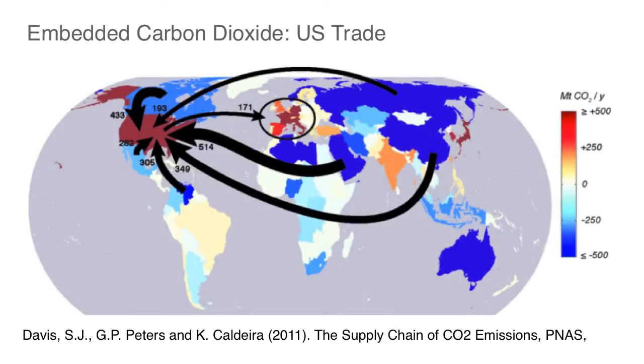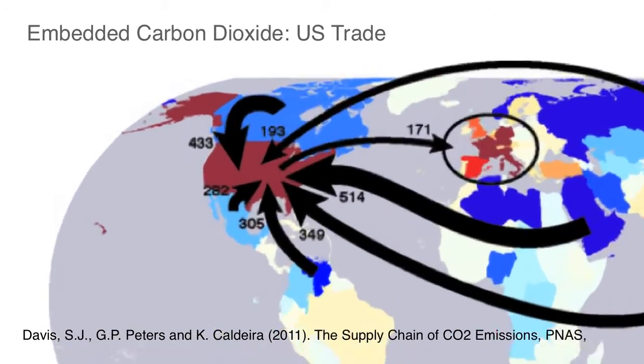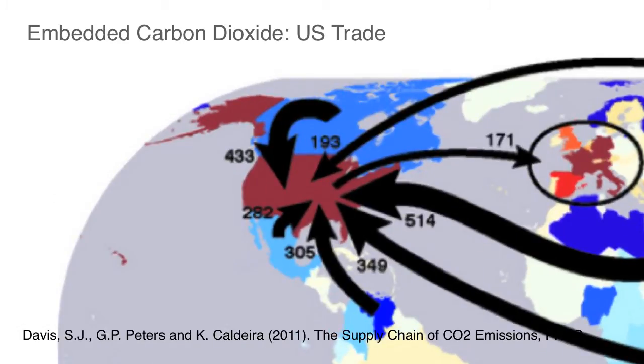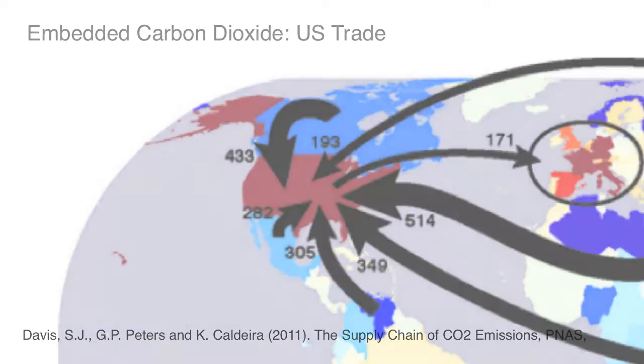For the United States, this results in this annual picture where you can see that we are net importers of embedded carbon dioxide. That fact is indicated by the arrows, with these larger arrows indicating larger imports of embedded carbon dioxide. The measure here is megatons of CO2 per year.